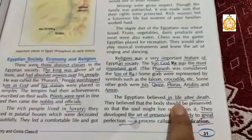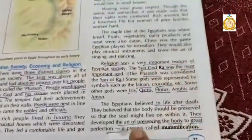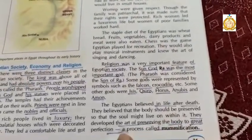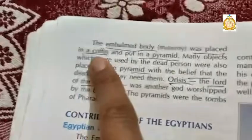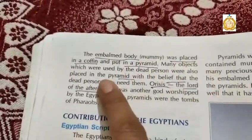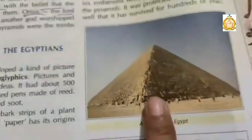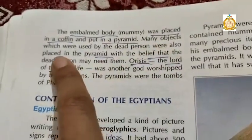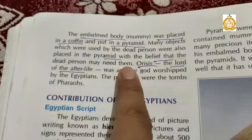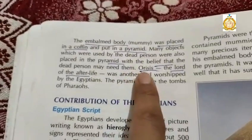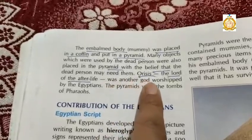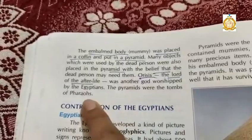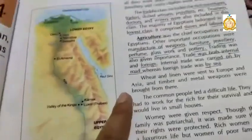Egyptians believed in life after death. They developed the art of preserving the body to great perfection, a process called mummification. A picture of an Egyptian mummy is given in the book. Under mummification, an embalmed body was placed in a coffin and put in a pyramid. Many objects were placed in the pyramid with the belief that the dead person may need them after death. Osiris, the lord of the afterlife, was another god worshipped by the Egyptians. The pyramids were the tombs of the pharaohs.